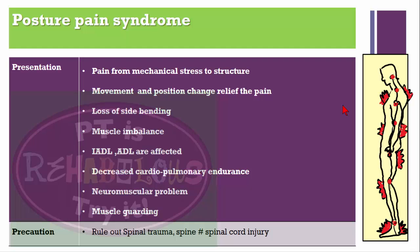If the scalene muscle is contracted, it increases force on the first rib. Since it is attached to the first rib, increased contraction elevates the first rib. Elevation of the first rib decreases the costoclavicular space and causes thoracic outlet syndrome (TOS). So forward head posture is directly related to TOS. We have to teach posture correction exercises for these patients.